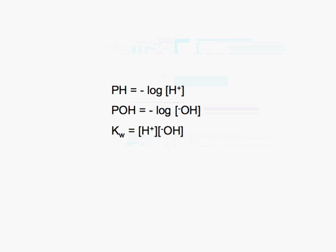There are three general formulas that we need in order to do pH. We have pH equals minus the log of the hydrogen ion concentration. We have pOH equals minus the log of the hydroxide ion concentration. This equation is used if you're given the hydronium ion concentration. This equation is used if you're given the hydroxide ion concentration.